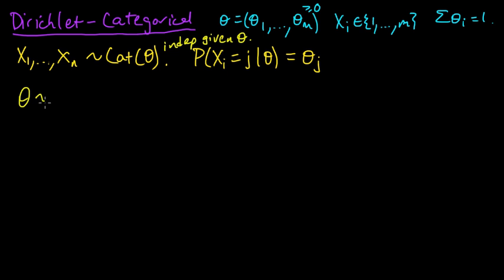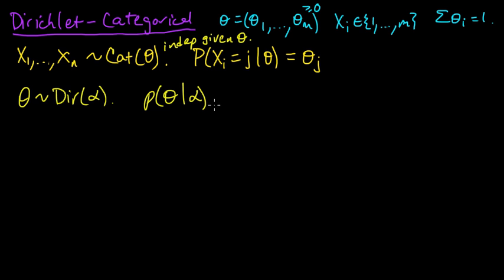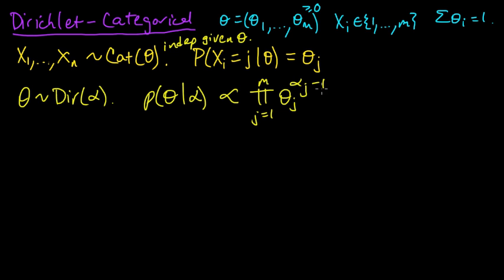Now we're going to put a distribution on theta. Theta will follow a Dirichlet distribution — sometimes we just write Dir — with parameter alpha. This means that the density for theta given alpha is proportional to the product, as j goes from 1 to m, of theta_j to the power alpha_j minus 1.